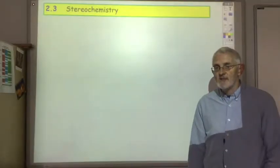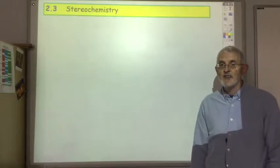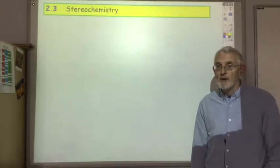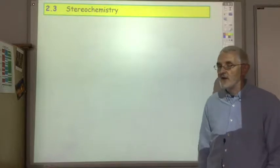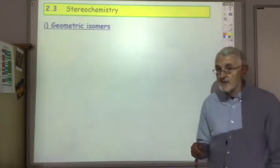In this section of stereochemistry we're going to come across two new types of isomers: geometric isomers and optical isomers. In this first lecture we're going to focus on the geometric isomers.